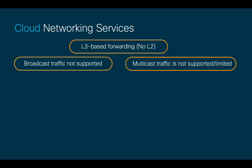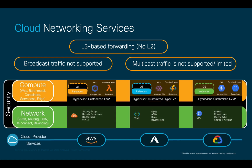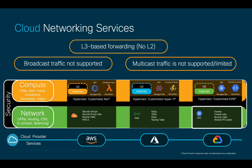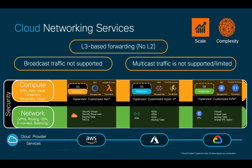The concepts we learned about before will very likely have different names and implementation options in all the different clouds. For example, in Azure, instead of VPCs and security groups, we may be talking about VNets, ASGs, and NSGs, and in the case of Google Cloud, we will simply talk about VPCs and firewall rules. As networks scale, understanding, configuring, and managing all these concepts may become challenging.